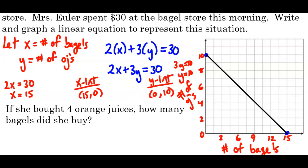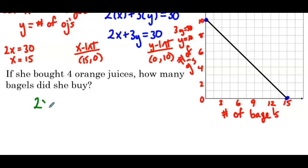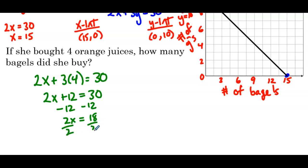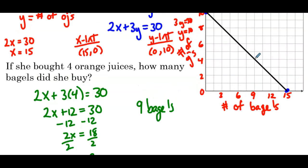All right, so there, all the points on this line, in particular, the nice points on this line, give us all the combinations of bagels and orange juices that Ms. Euler could have chosen. So if she bought four orange juices, so they're telling us she bought four orange juices, how many bagels did she buy? So we could substitute 4 in for y. So we'd have 2x plus 3 times 4 equals 30. So 2x plus 12 equals 30. Subtract 12 on both sides. 2x equals 18. Divide by 2 on both sides. x equals 9. So she would have bought 9 bagels. Now, the point 9, 4, should be on our graph. 9, 4, that's that point right there. So we could have either figured this answer out based off our graph or algebraically. And I wanted us to see both of the options.